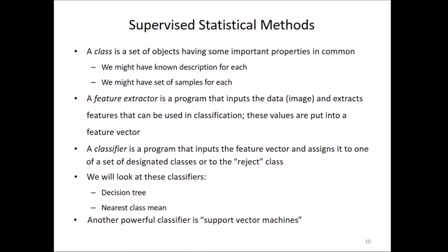Now for supervised statistical methods. A class is a set of objects having some important properties in common. We might have no description for it, or we might have several samples for each. A feature extractor is a program that inputs the data or image and extracts features that can be used in classification. These values are put into a feature vector. A classifier is a program that inputs the feature vector and assigns it to one of a set of designated classes or to the reject class. Various classifiers include decision trees, nearest class mean, and support vector machines.